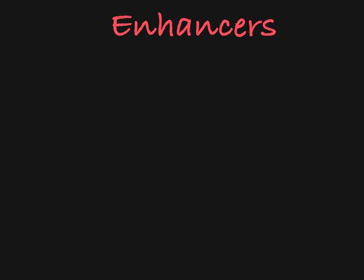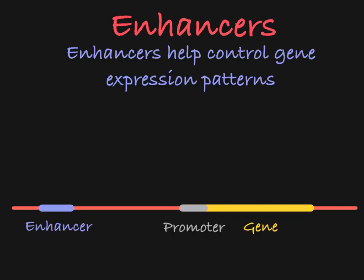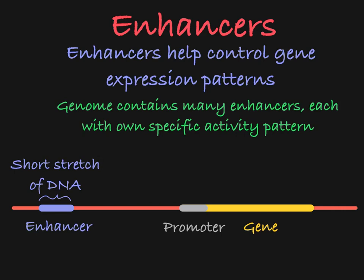How does the organism control which genes are expressed at a given time in a specialized cell? Enhancers play a large role. Enhancers are short stretches of DNA that help regulate which genes are expressed in a cell and at which points in the cell's life the genes are expressed. Specific enhancers are only active at specific times, based on the needs of the cell. This means that there are different enhancers controlling groups of genes that are all active or inactive at the same time.